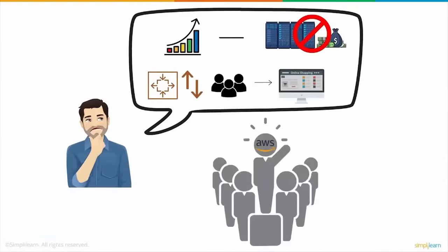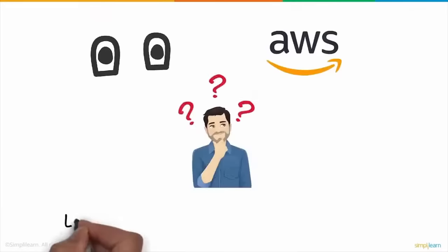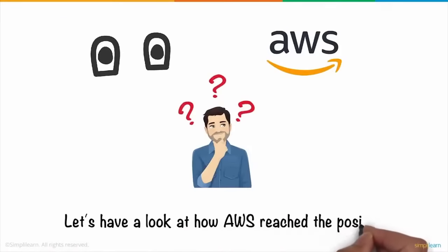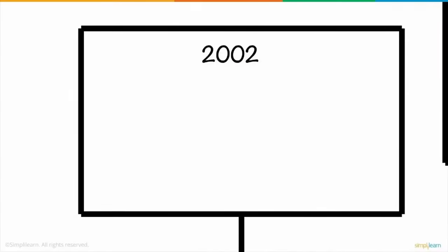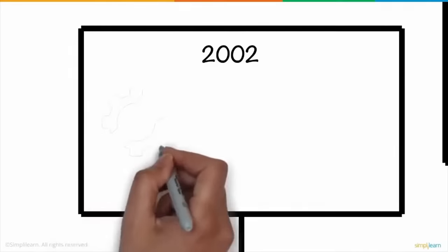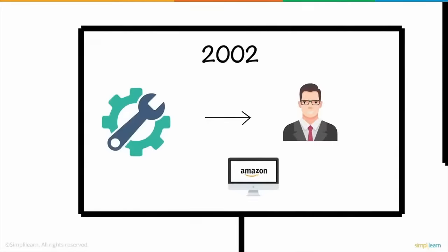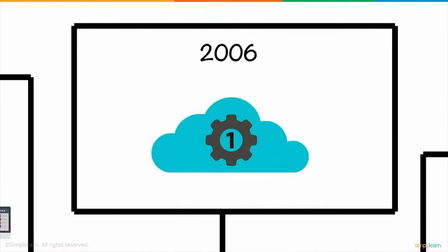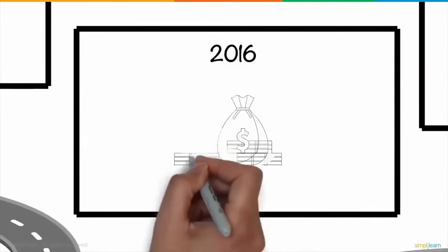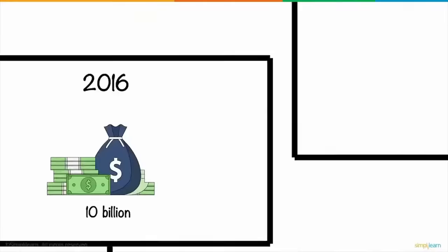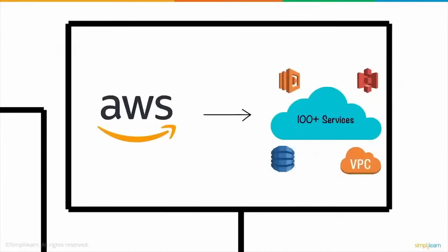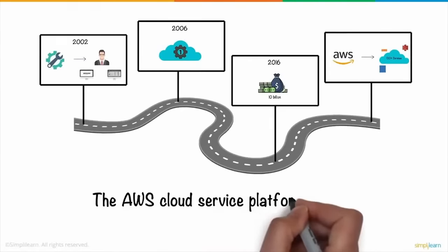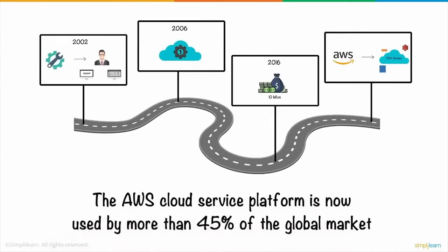Amazon Web Services — one of the leaders in the cloud computing market. AWS was first introduced in 2002 as a means to provide tools and services to developers to incorporate features of Amazon.com to their website. In 2006, its first cloud services offering was introduced. In 2016, AWS surpassed its 10 billion revenue target. And now, AWS offers more than 100 cloud services that span a wide range of domains. Thanks to this, the AWS cloud service platform is now used by more than 45% of the global market.